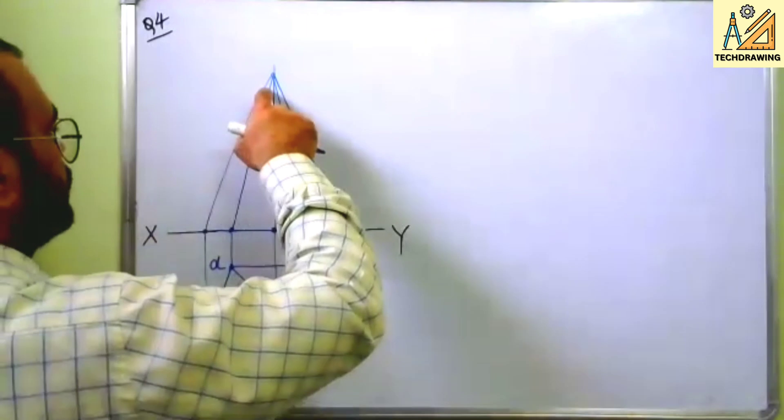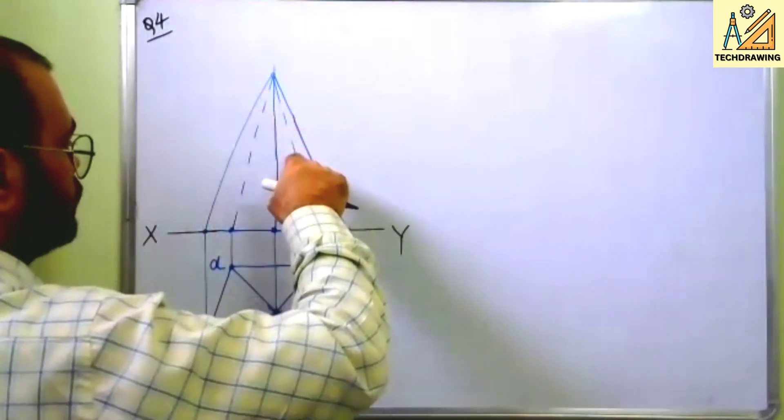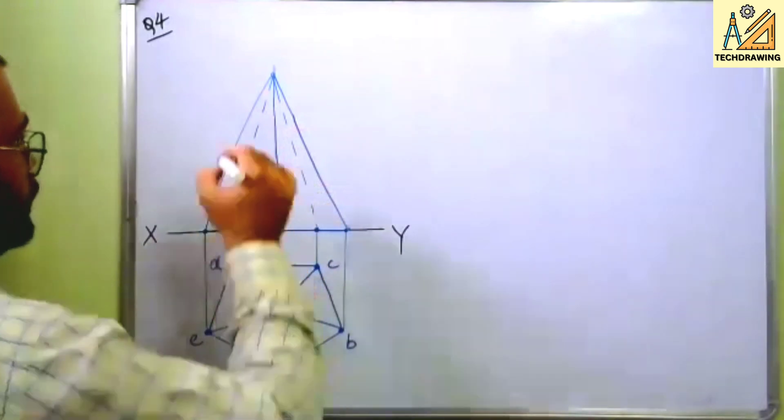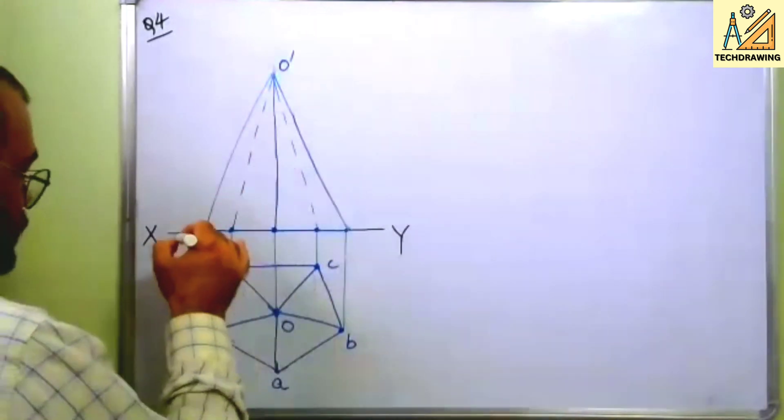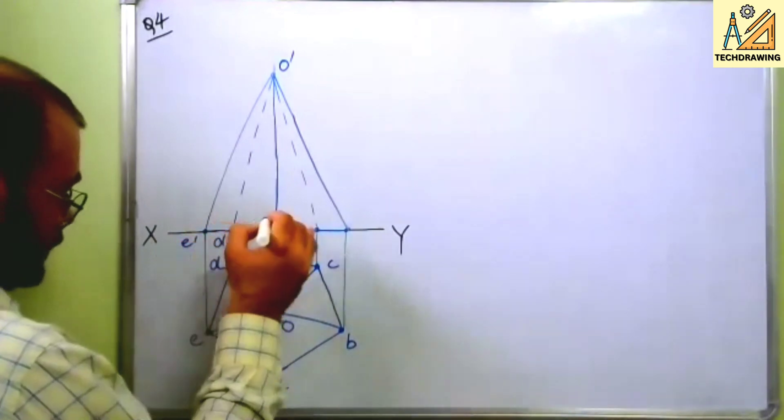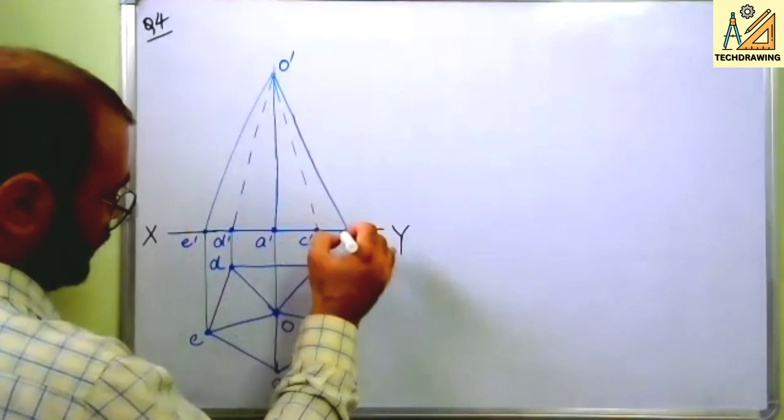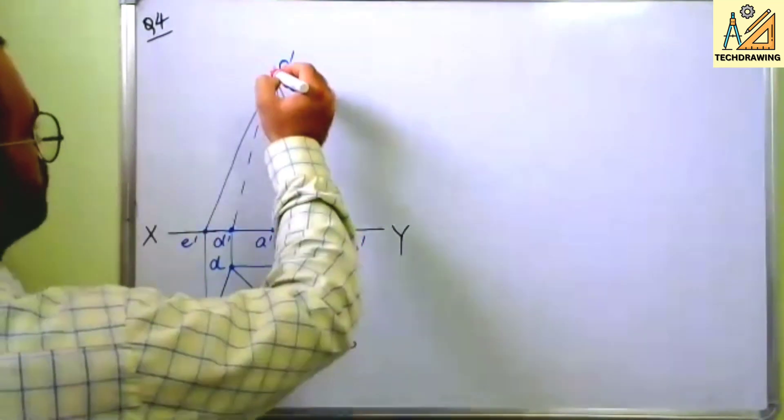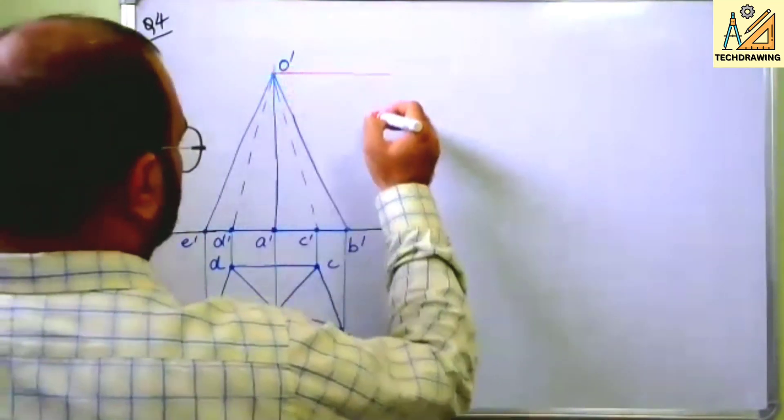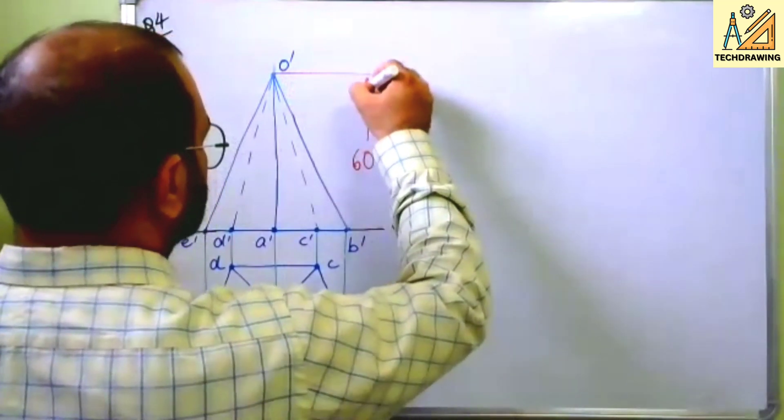Join all these at this apex. Here if you see this will be hidden. This is O dash, E dash, D dash, A dash, C dash and this is B dash. This is equal to 60. Height is 60.